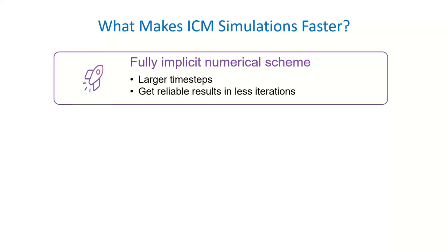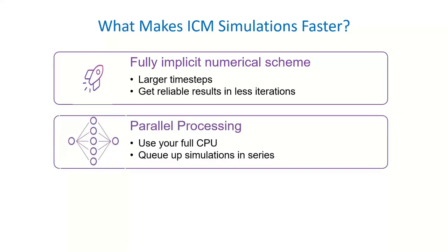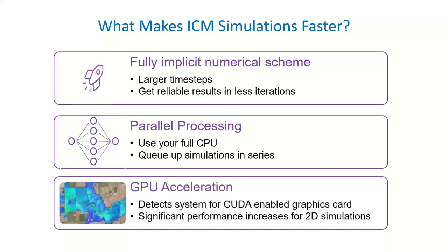What makes it faster: there's a fully implicit numerical scheme, which basically allows you to have larger time steps and get reliable results in fewer iterations. There's also parallel processing, which allows you to make full use of your CPU and queue up simulations in series. And there's GPU acceleration for those heftier 2D simulations — if you're running Civil 3D or ArcGIS Pro on your computer, you probably have a decent GPU card, and utilizing that is advantageous for more intensive simulations.